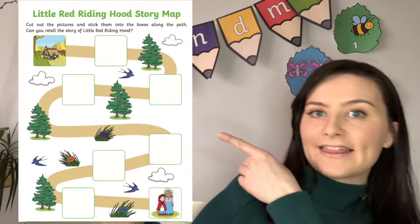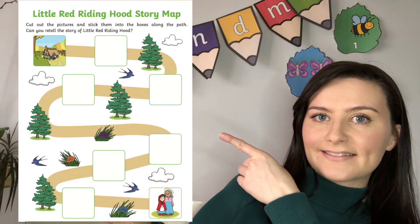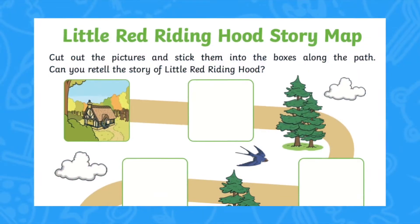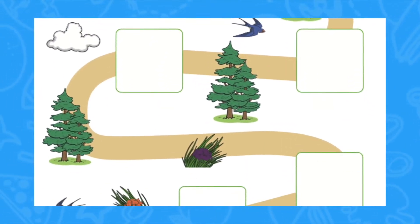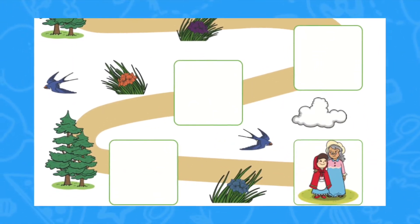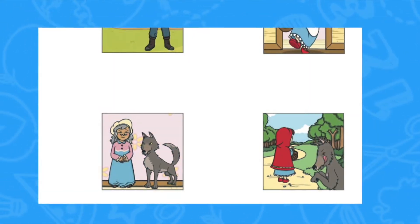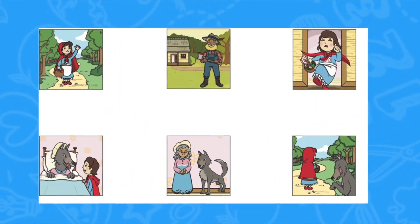Hi there, it's Fiona from Twinkle Teaches. Today we're going to take a closer look at this resource. This fantastic Little Red Riding Hood Cut and Stick Story Map activity is a great way to support children on their story sequencing.